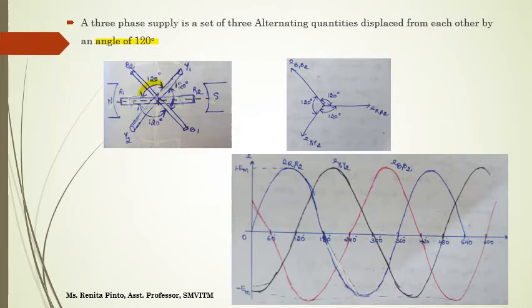From Y1 to B1, it is 120 degrees. From B1 to R1, it is again 120 degrees. So all three coils are displaced from each other by 120 degrees. When these coils rotate with a uniform angular velocity of omega radians per second, a sinusoidal EMF displaced by 120 degrees is induced in these coils.